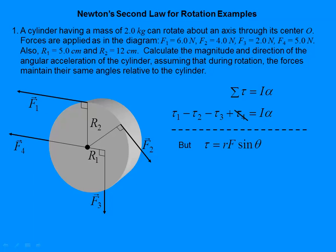In each case, torque is RF sine theta, but in all three of these, notice they are 90 degrees to the radii — tangent to the disc. So that's sine of 90, which is 1, so each torque is RF. But we've got to be careful that we apply the right R and the right F.